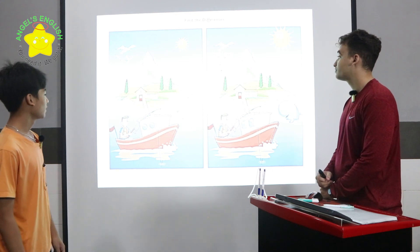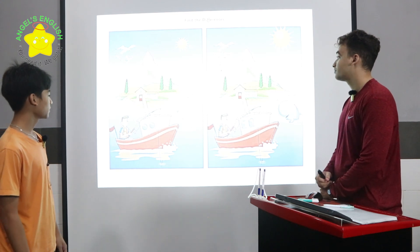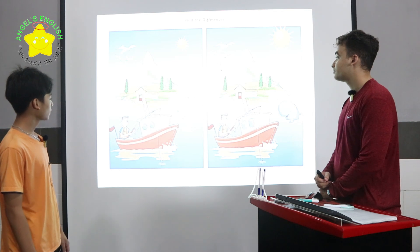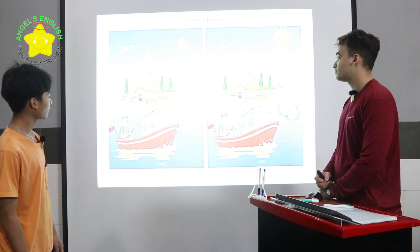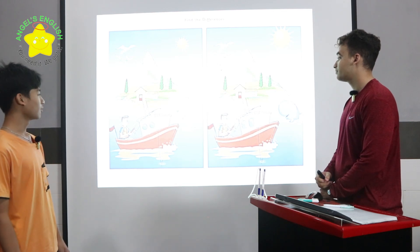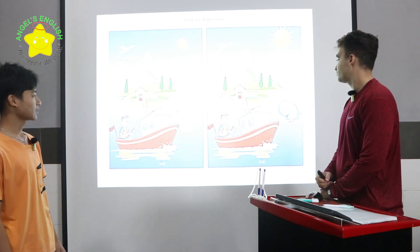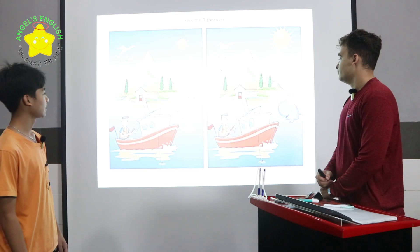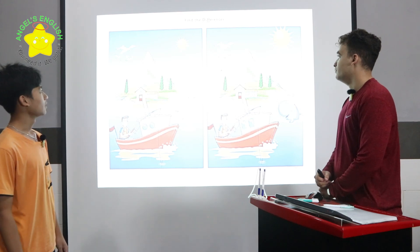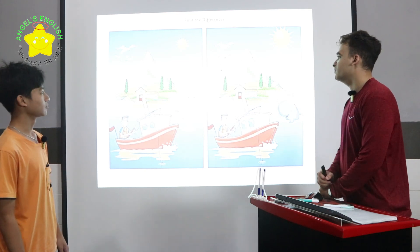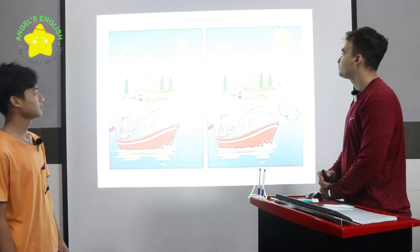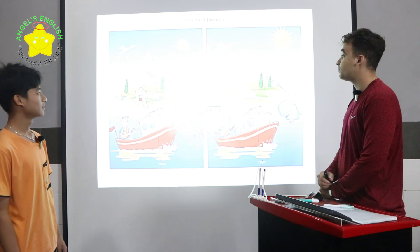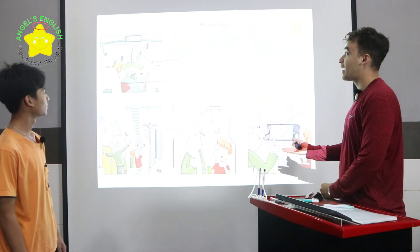In the first picture, the windows are circular. But in the second picture, the windows are rectangular. In the first picture, there are three seagulls. But in the second picture, there are five seagulls. Very good.